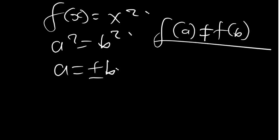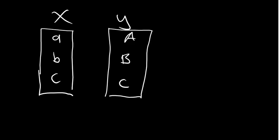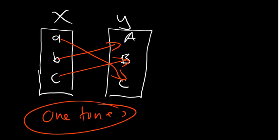Now let's look at how to represent a one-to-one function using mapping. Let's say we have elements a, b, c on the x side and A, B, C on the y side. If each element maps to a distinct element — a to A, b to B, c to C — then every element of x maps to exactly one element of y, meaning this function is one-to-one.